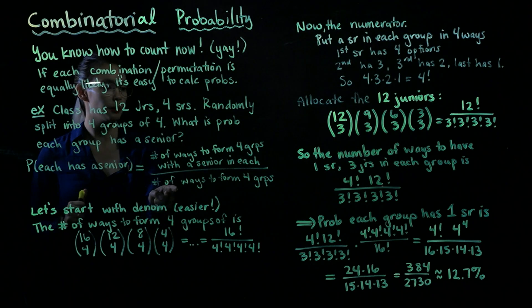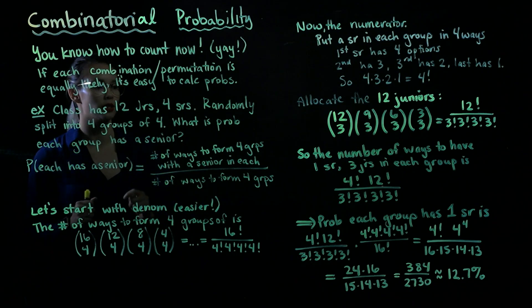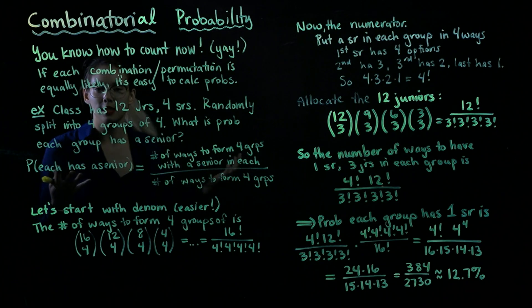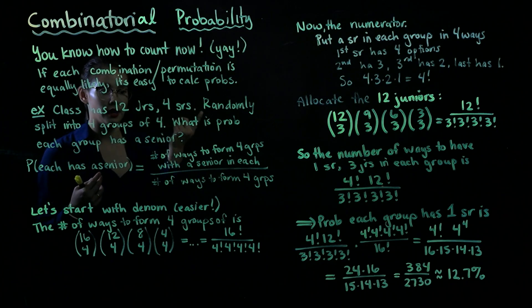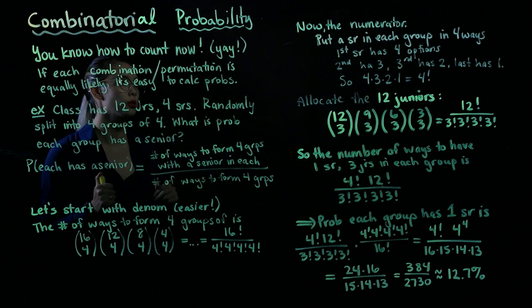Now we have the denominator, so we can work on the numerator. We're trying to figure out the number of ways to form four groups with a senior in each group. We can think about it as: first, let's distribute the seniors into the four groups.